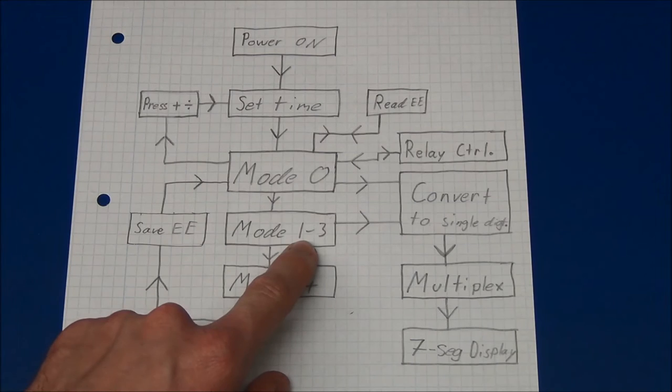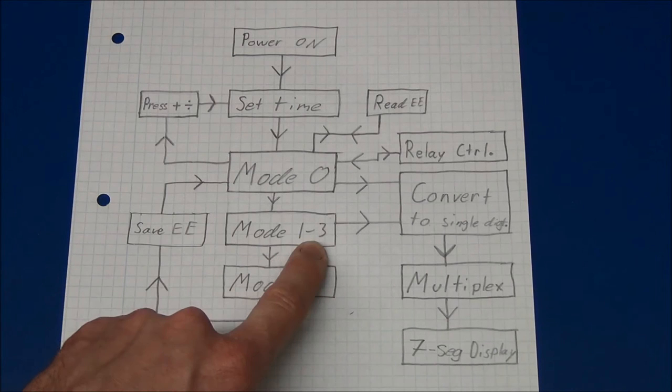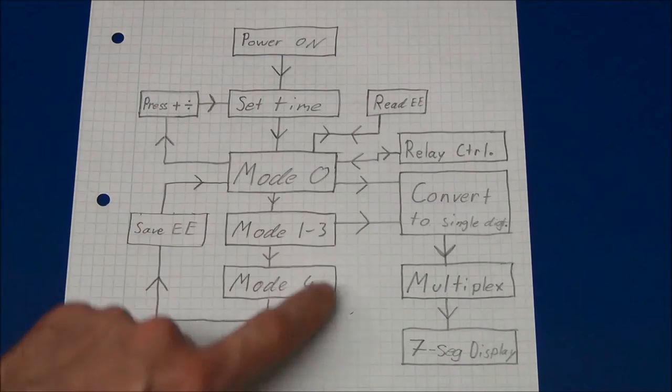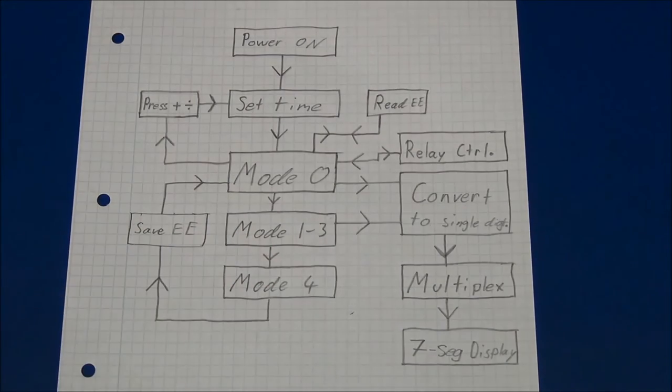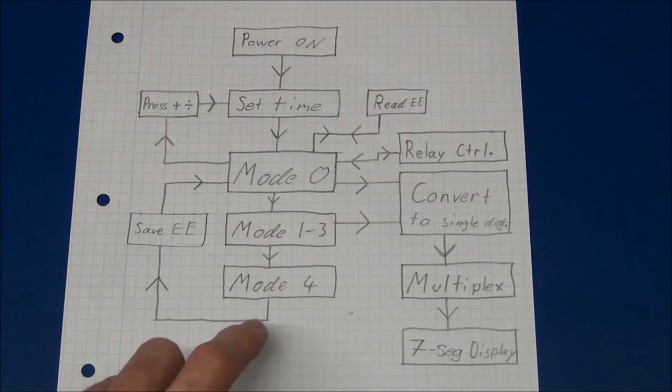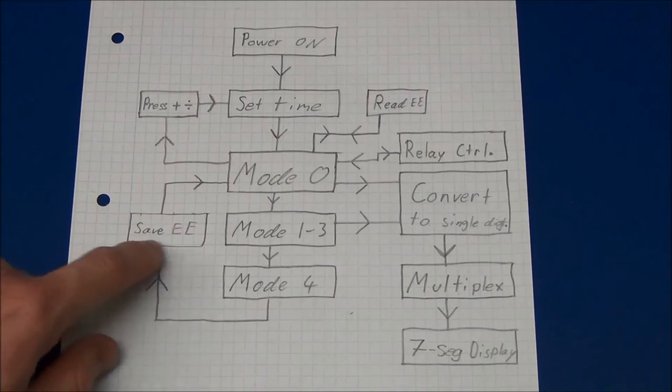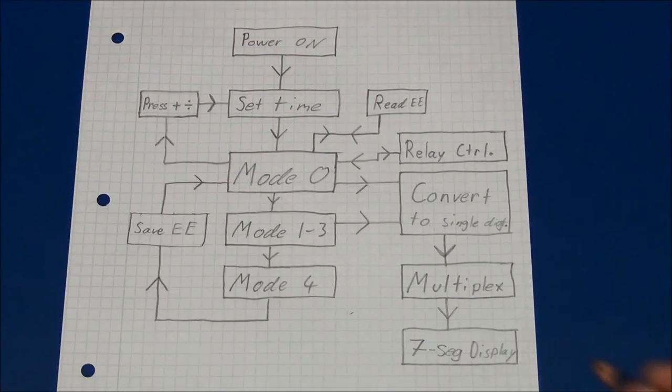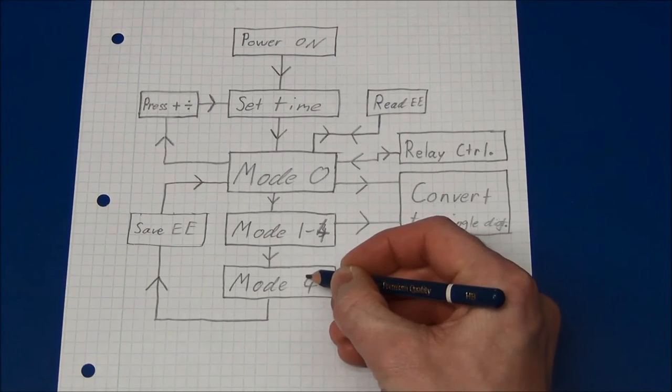So basically mode 1 will ask you for the first on time, mode 2 will ask you for the first off time, mode 3 will ask you for the second on time. And I made a mistake here, that should be a 4 and 5 down here. So 4 will ask you for the second off time, and when we enter mode 5, that will just save these values and it will return to mode zero.